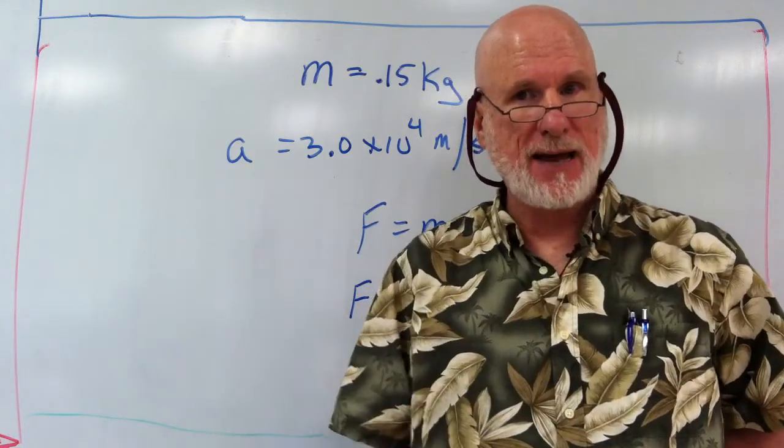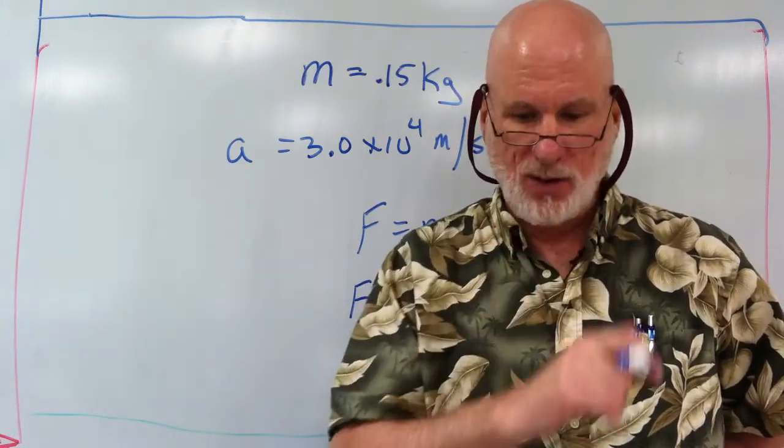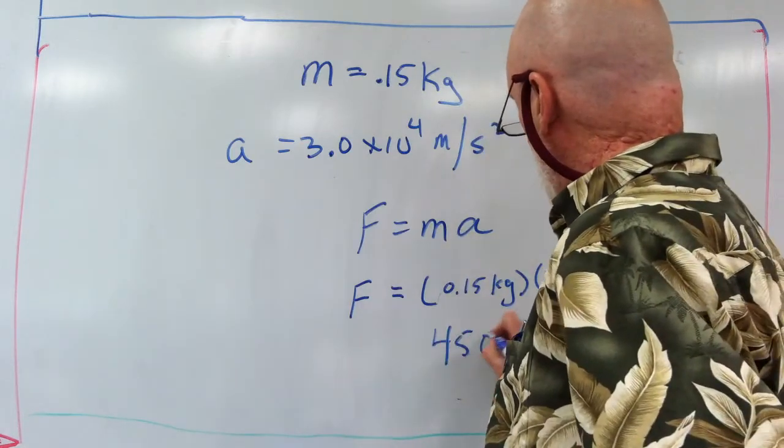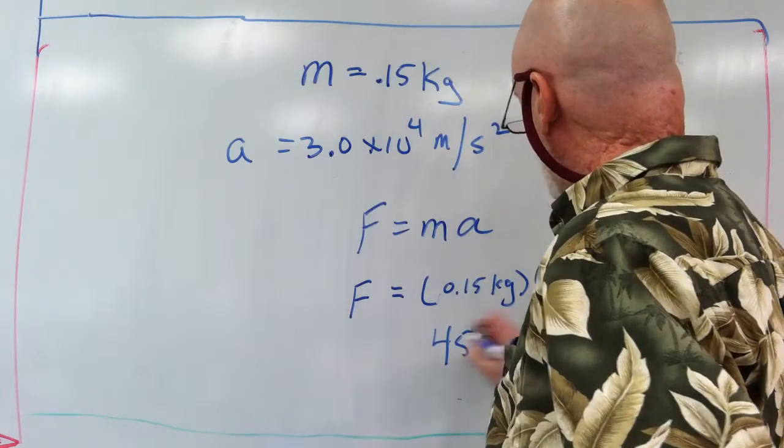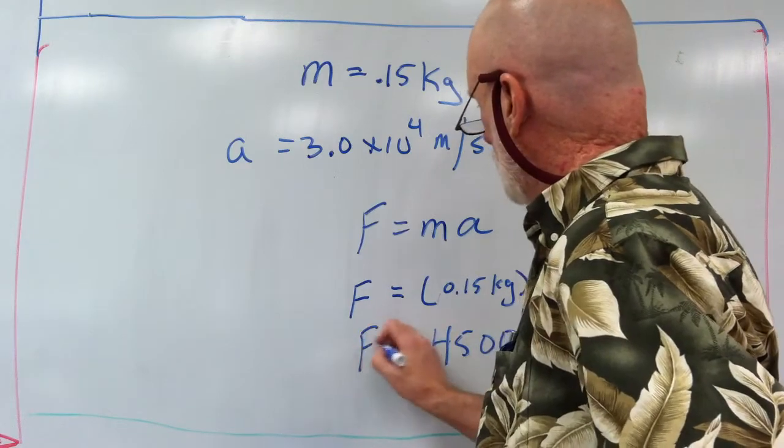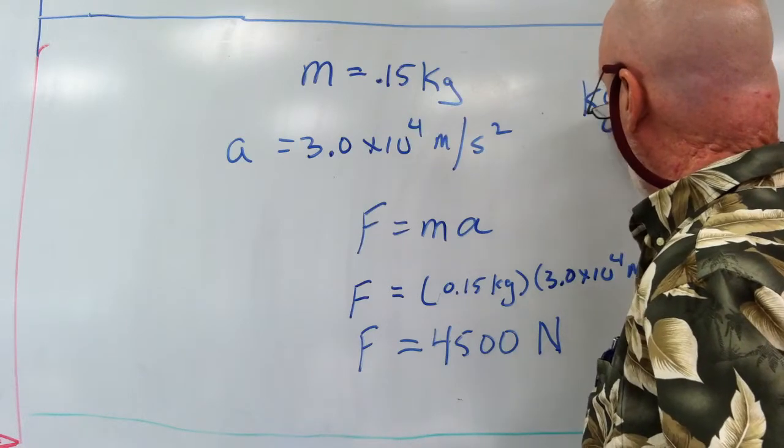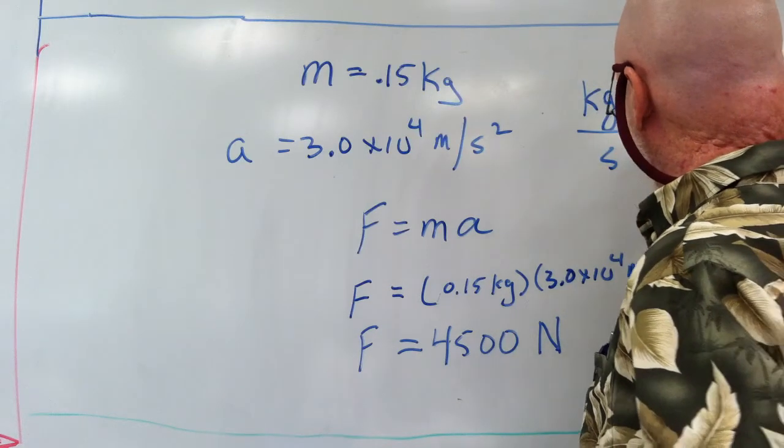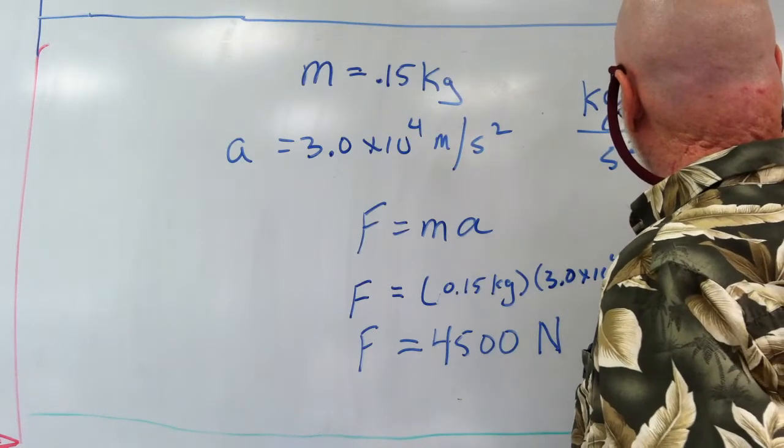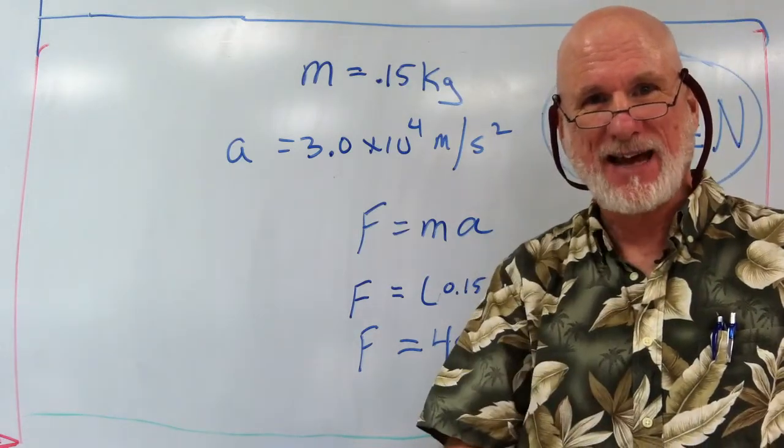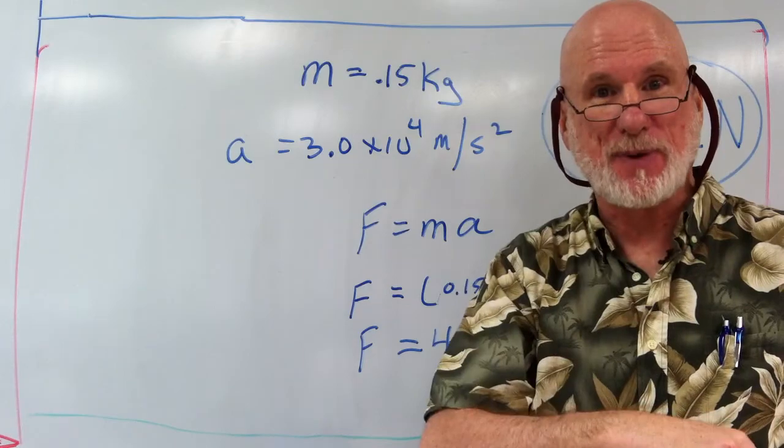F equals MA, Newton's second law. And the answer is going to be 4,500 newtons. And we know that a newton is actually kilogram meters per second squared. That's how a newton is defined, right? Easy? Thank you very much. I'll see you in the April when we play baseball. Bye.